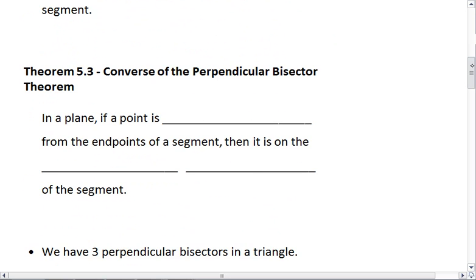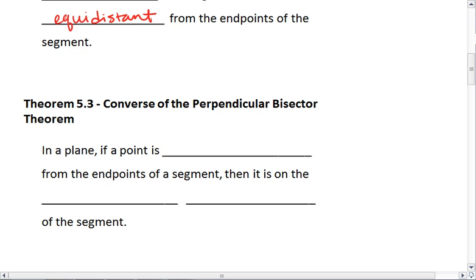We also have the converse to the perpendicular bisector theorem. That's theorem 5.3. And that tells us that in a plane, if a point is equidistant from the endpoints of a segment, for example, we have some point out here, C, that is equidistant from both A and B.